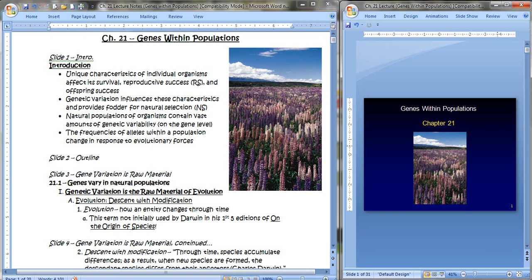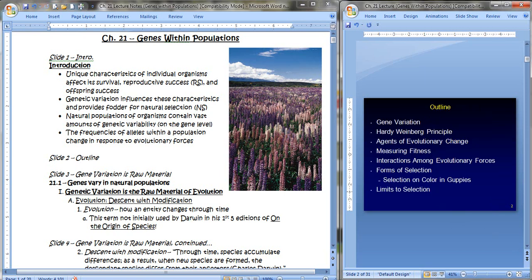As a basis for what we're getting onto here is that there are unique characteristics of individual organisms that affect its survival, its reproductive success, and its offspring success. And the genetic variation influences these characteristics and provides fodder for natural selection. In other words, without genetic variation, we wouldn't see these changes over time. And natural populations of organisms contain so much genetic variability on the genetic level, and therefore the frequencies of their alleles in the population will change in response to evolutionary forces. So what we'll be talking about are these topics.